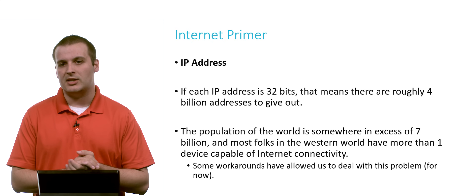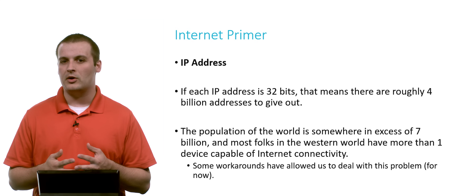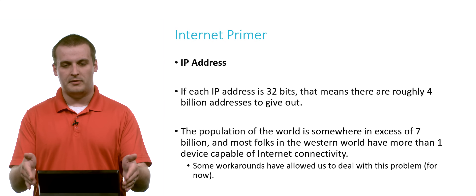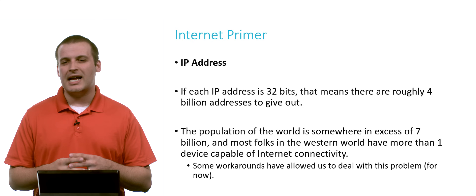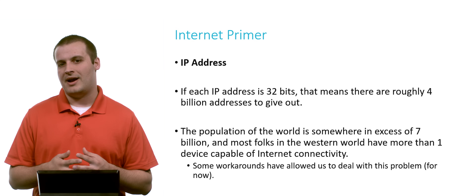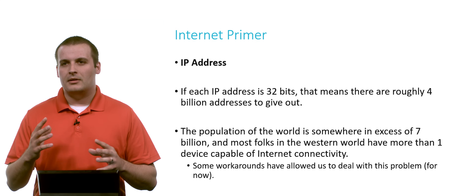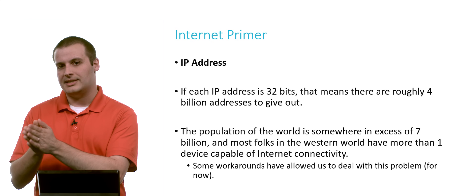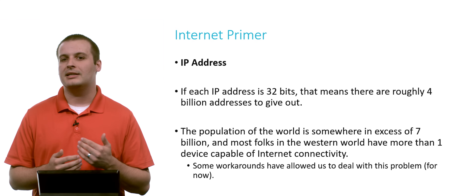If every IP address is 32 bits, we have about 4 billion to give out. But we can see a problem: the world population is somewhere north of 7 billion people, and in the Western world most people have more than one device capable of internet connectivity. So we have at least 7 billion people and only 4 billion addresses, and every device is supposed to be uniquely identified. We have developed some workarounds, something called a private IP address, which basically allows the internet to fake out a little bit — having private addresses and funneling them through one single address shared by many different computers. But that's not a long-term fix, so we need a different way of dealing with this.